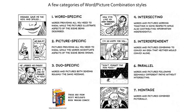So just priming them with some fun creative stuff like that. Intersection, independent, parallel — all take advantage of your reader's imagination to read into things more. Word-specific can too, at least the example here does. The other two — duo-specific and picture-specific — less so; they're kind of explicit. Explicit storytelling in comics can work, but the most powerful and evocative stuff is the more implicit, the stuff that invites the reader to interpret.